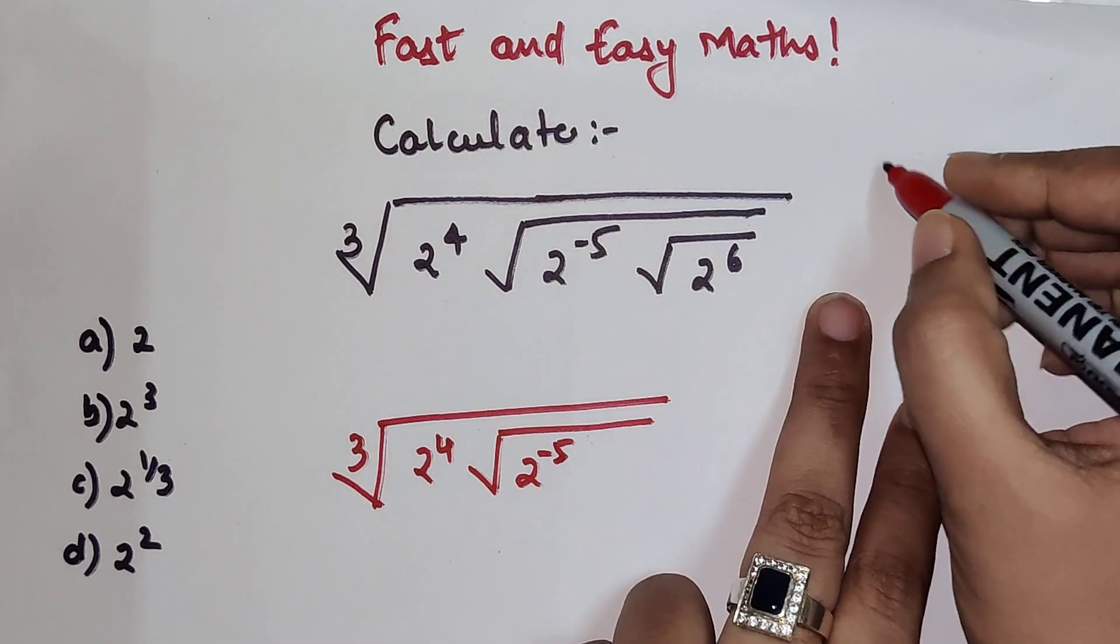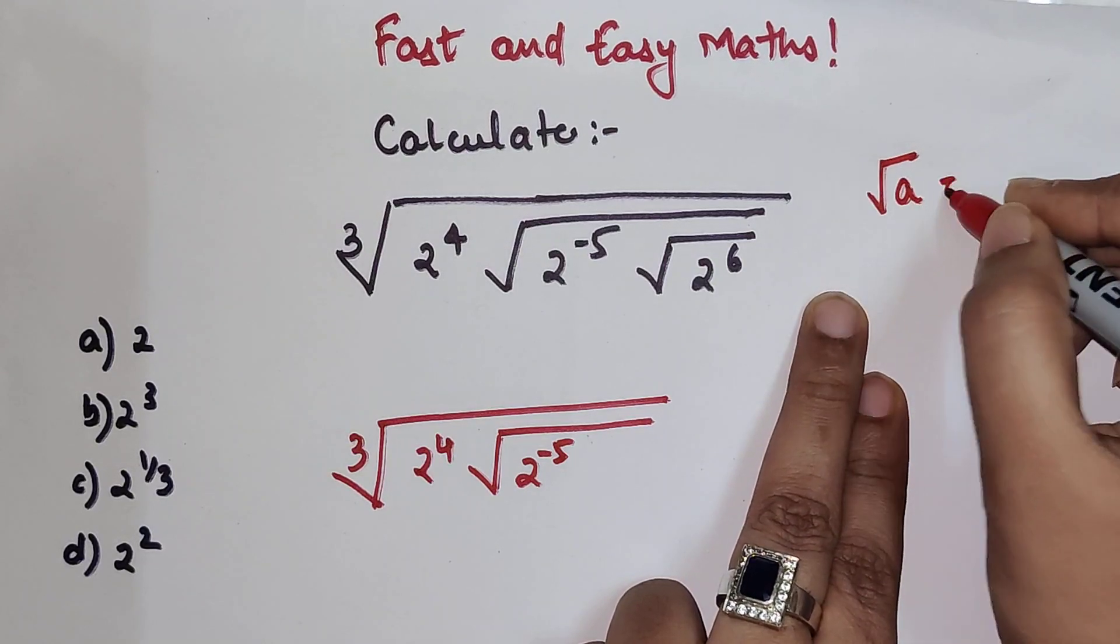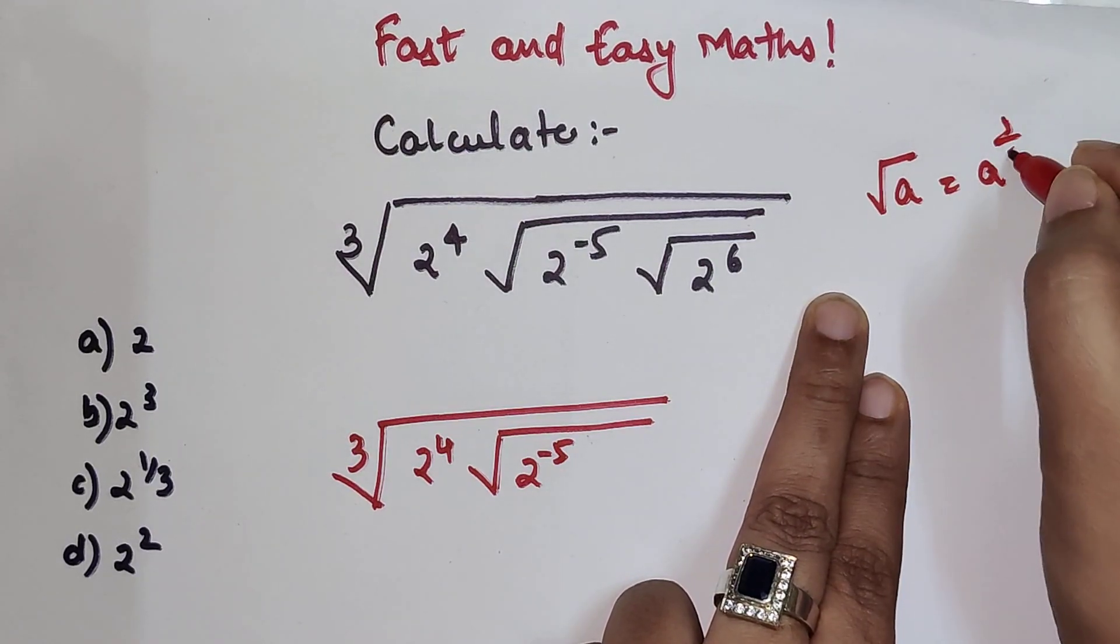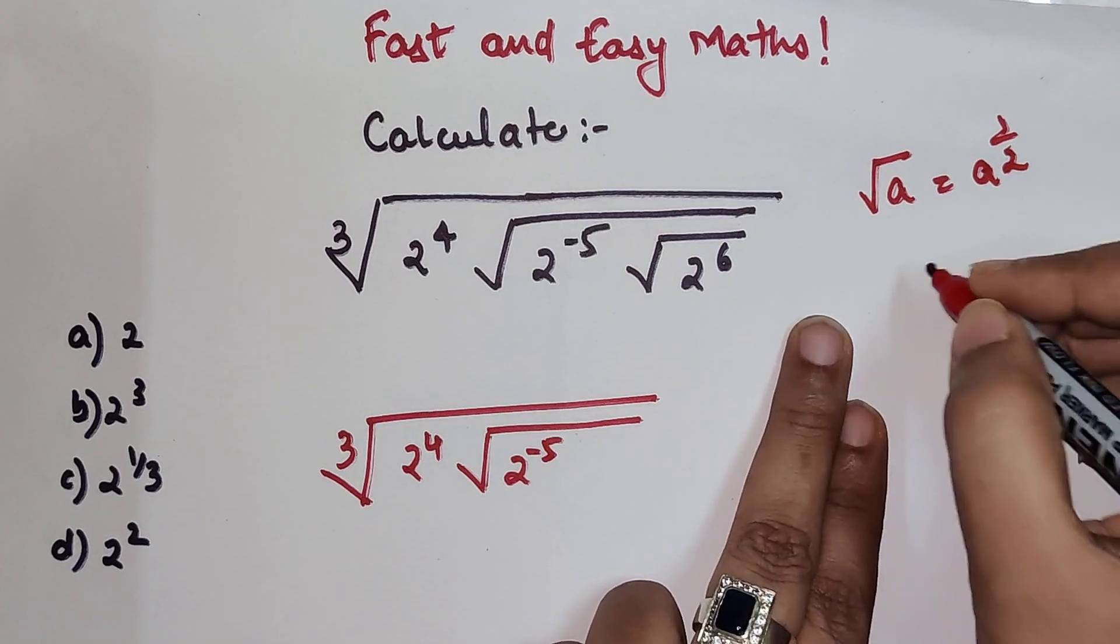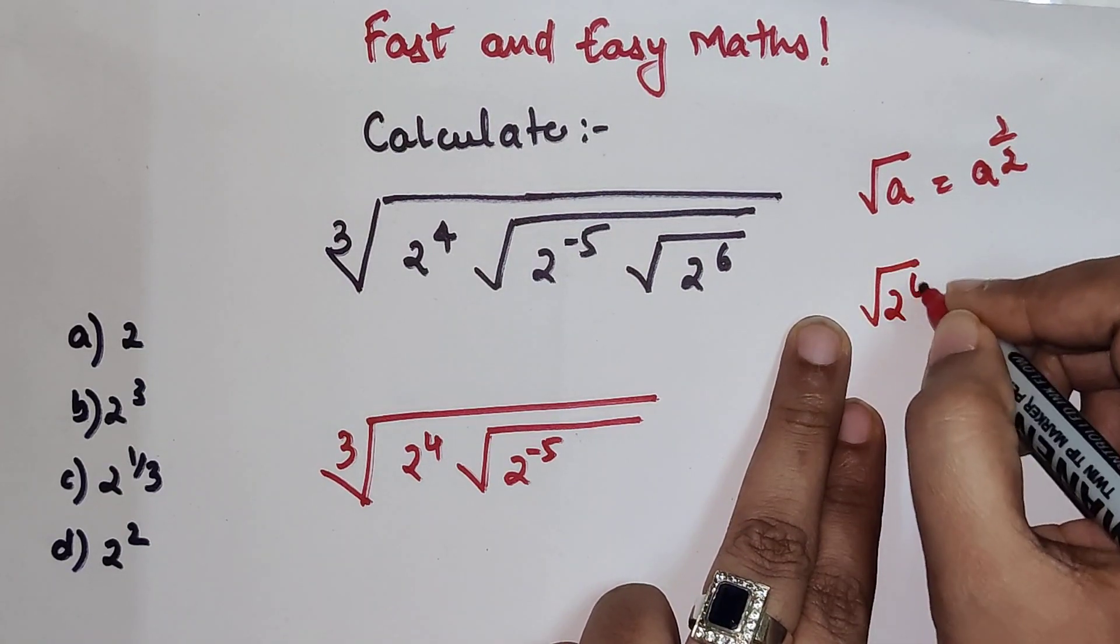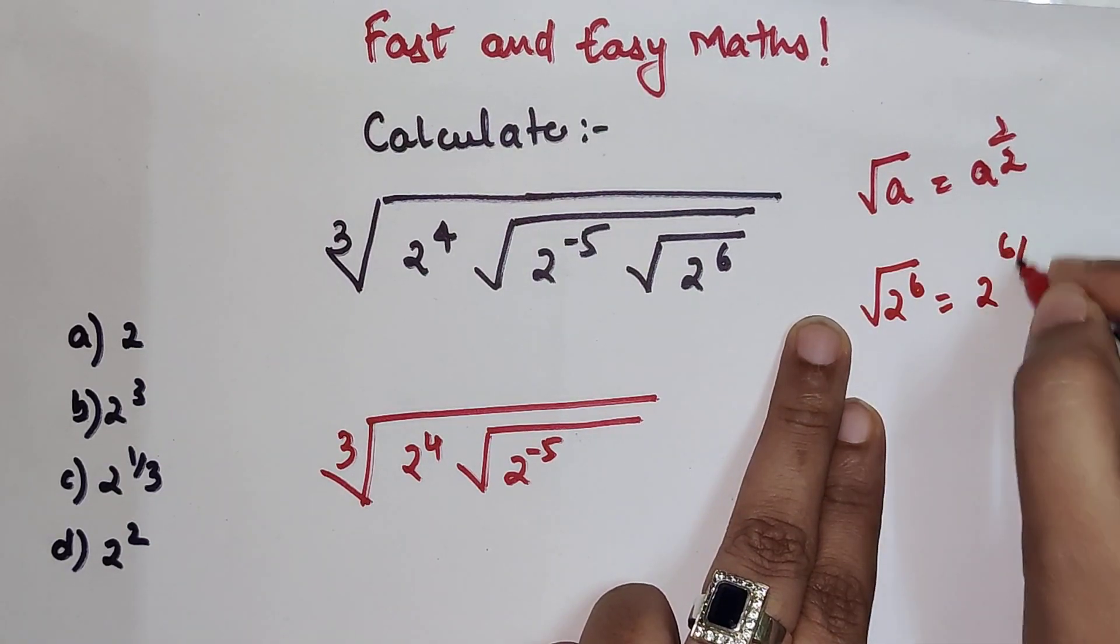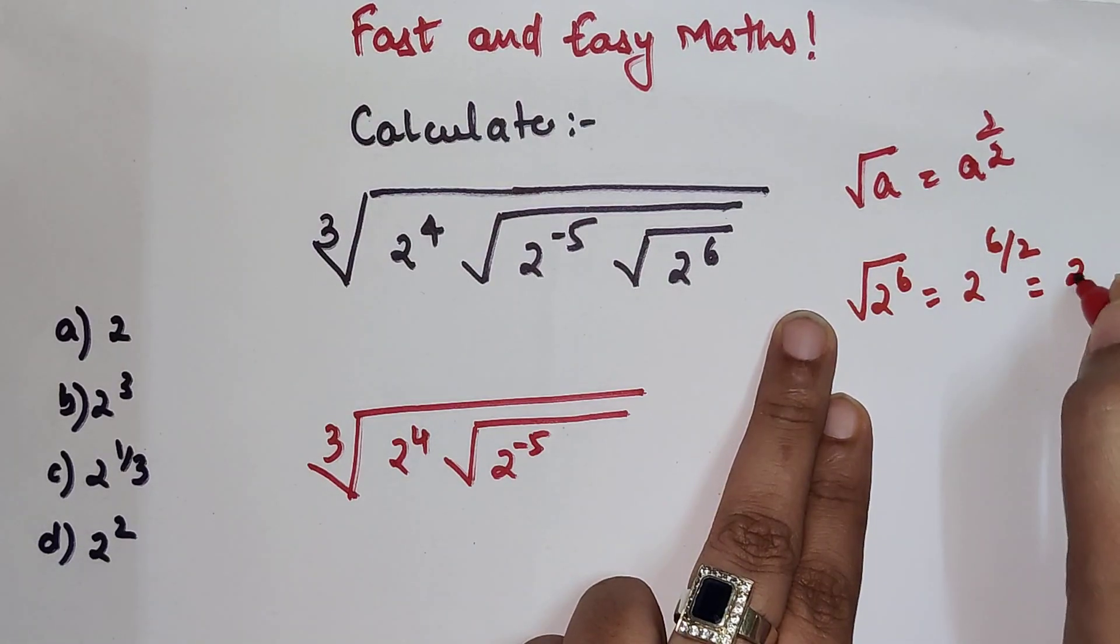Please understand whenever you have a square root it can be taken as a raise to 1 upon 2, correct. So square root of 2 raise to 6 is nothing but 2 raise to 6 upon 2, which is going to get you 2 raise to 3.